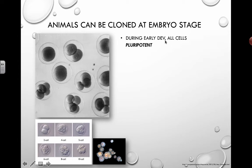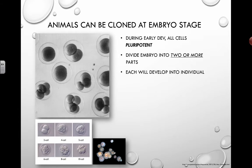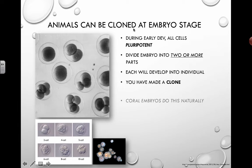During early development, all cells are pluripotent — each one of these cells hasn't specialized or turned into anything yet. So theoretically, you can still create anything from these cells. If you take this ball of cells and split it into two or more parts, each one has the potential to develop into an individual. So you are actually cloning at an early stage — you have made a clone.